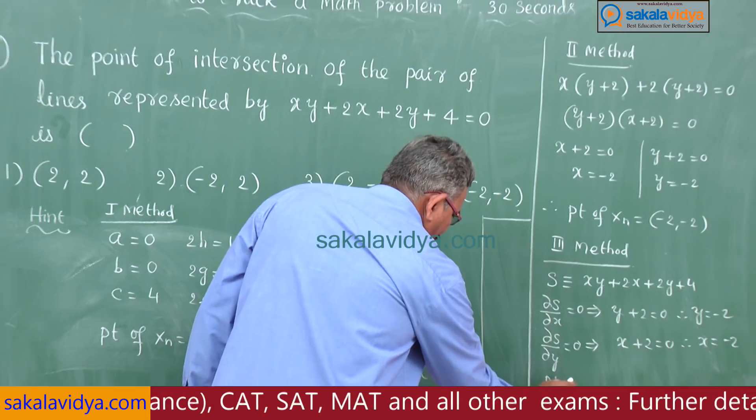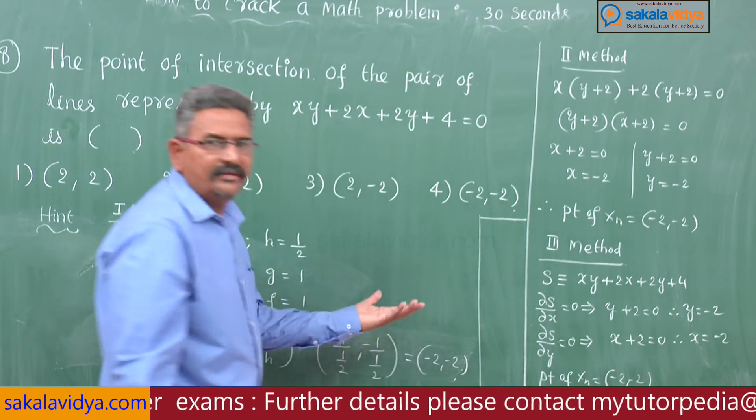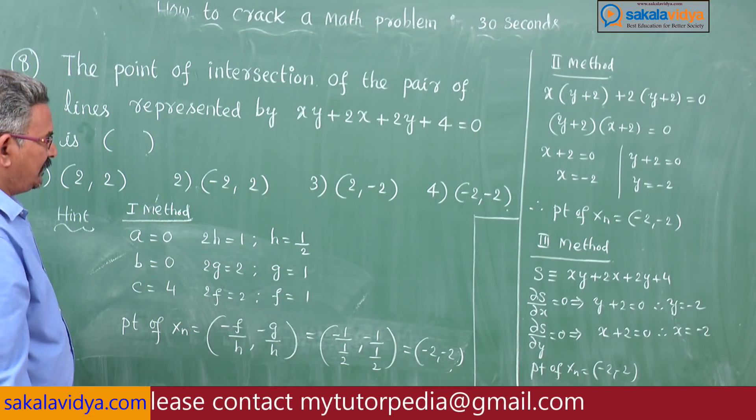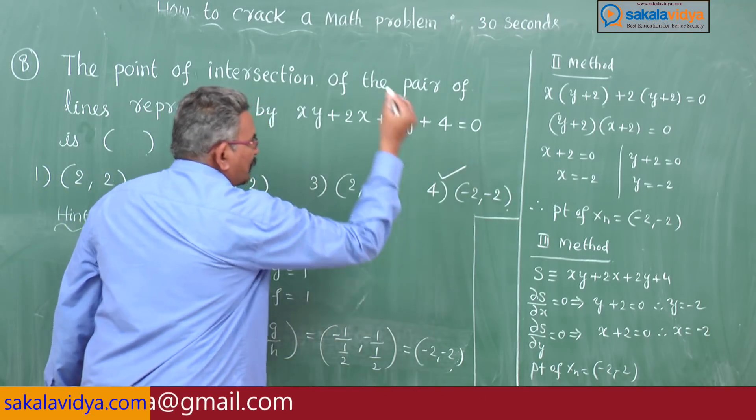Point of intersection is minus 2 comma minus 2. Using these 3 methods, which will be the right option? Yes, you are right, the fourth one is the right option.